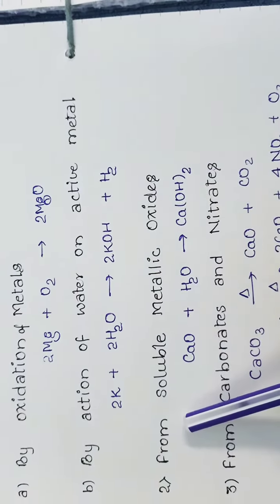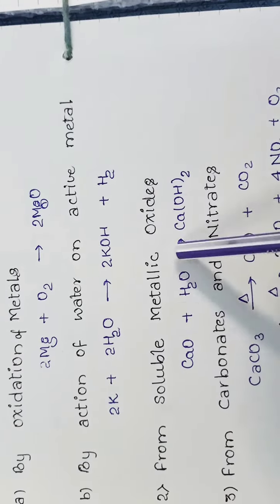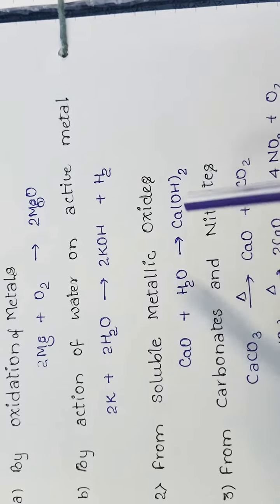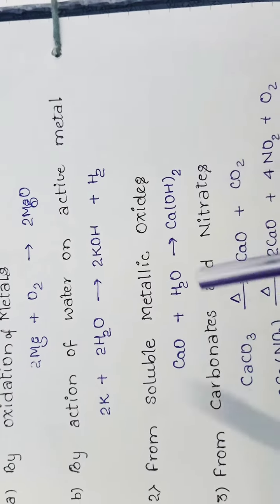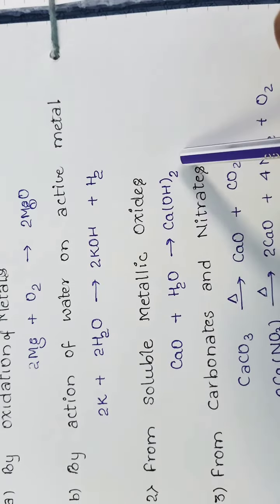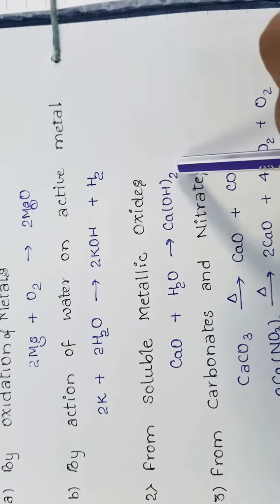Next method: from soluble metallic oxide. When metallic oxide combines with water, it gives bases also. Calcium oxide reacts with H2O to give Ca(OH)2, calcium hydroxide.